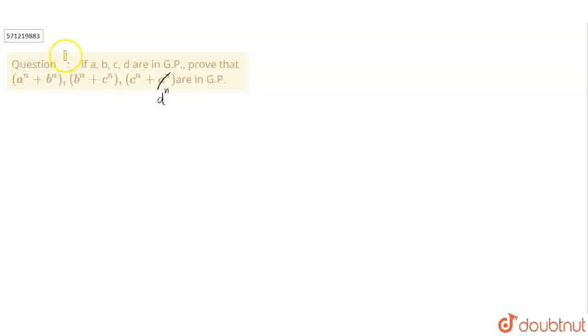Hi everyone, in this question it's given, if A, B, C, D are in GP, prove that A power N plus B power N, B power N plus C power N and C power N plus D power N. Here is a correction, it is not A power N, it is D power N are in GP. Let's see the solution part.